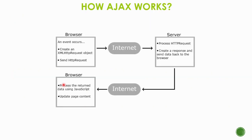How Ajax works: When an event occurs in the browser, an XMLHttpRequest object is created and sent through the Internet to the server. The server processes this HTTP request, creates a response, and sends data back to the browser through the Internet. The browser then processes the returned data using JavaScript and updates the page.